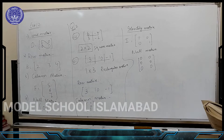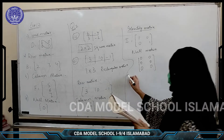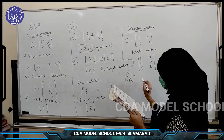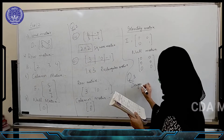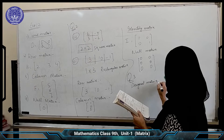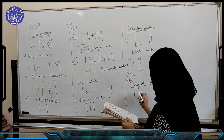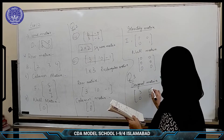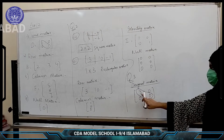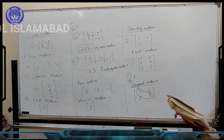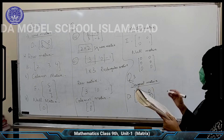Now question number 3: from the following matrices, identify diagonal, scalar and unit matrix. For diagonal matrix — here this is also diagonal; this is called diagonal, and at least one diagonal entry is non-zero, so this is a diagonal matrix. B is also a diagonal matrix, and A is also a diagonal matrix.